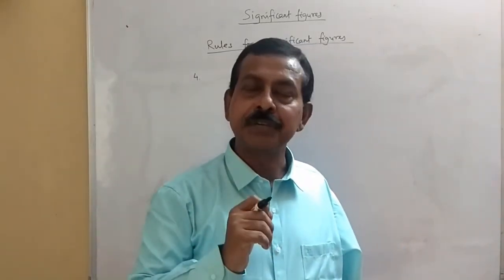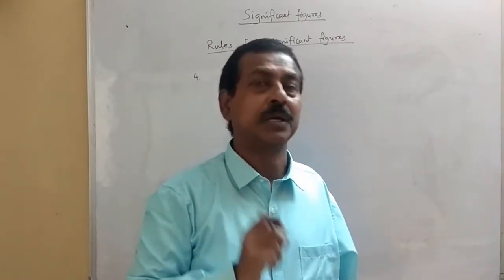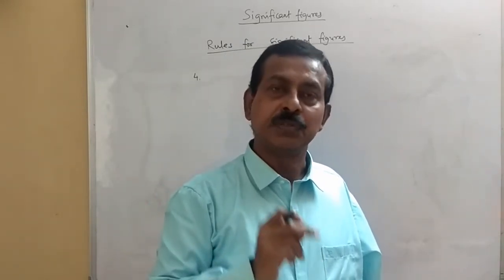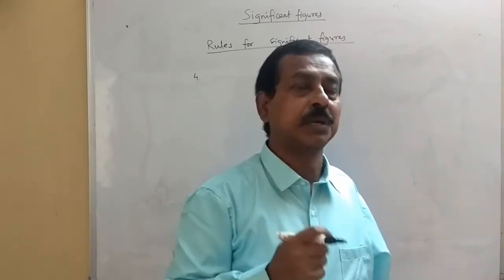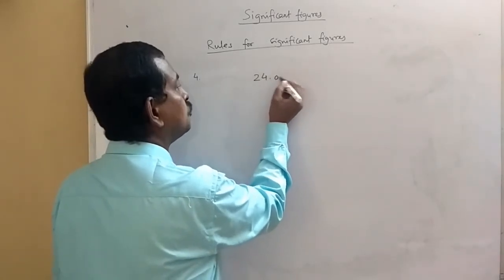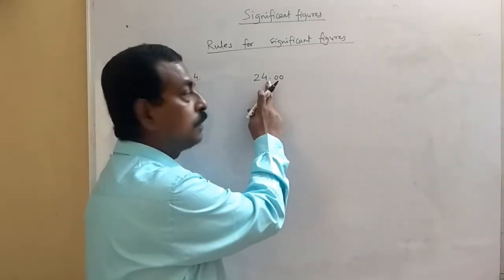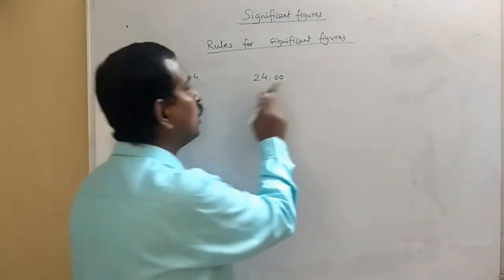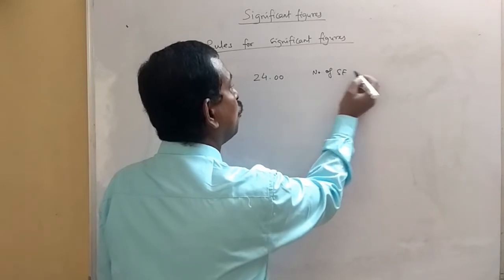Zeros after the decimal but appearing at the end of the number are significant. For example, if you have 24.00, these zeros are after the decimal but at the end of the number, so they are significant. The number of significant figures here will be 4.